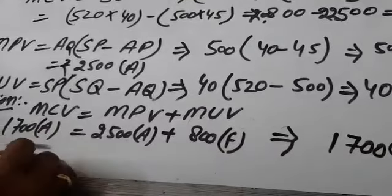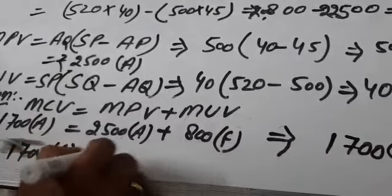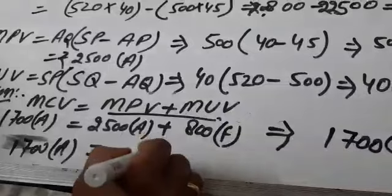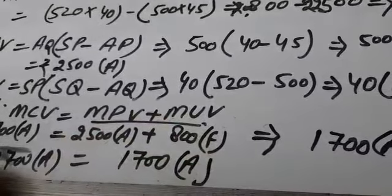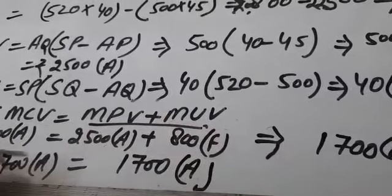So MCV value 1700 equals both values, 1700 from MPV plus MUV. These answers are correct. Thank you.